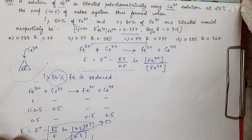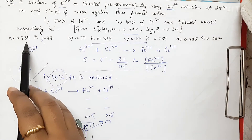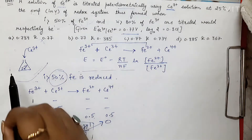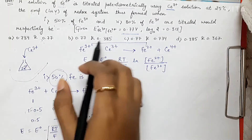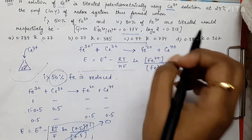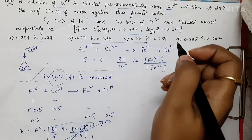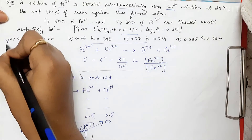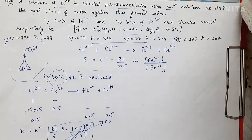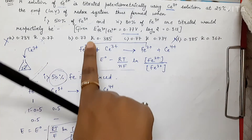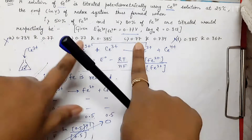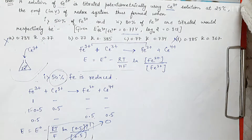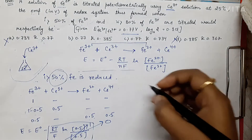Now if we look at the four options, options A and D can be cancelled out because options B and C both show 0.77 V for the first case. We now need to solve the second part to distinguish between B and C.